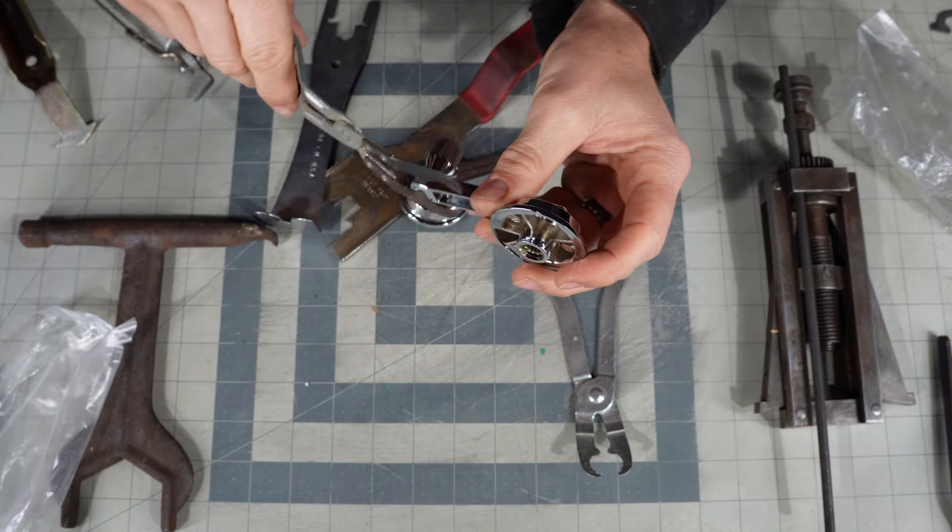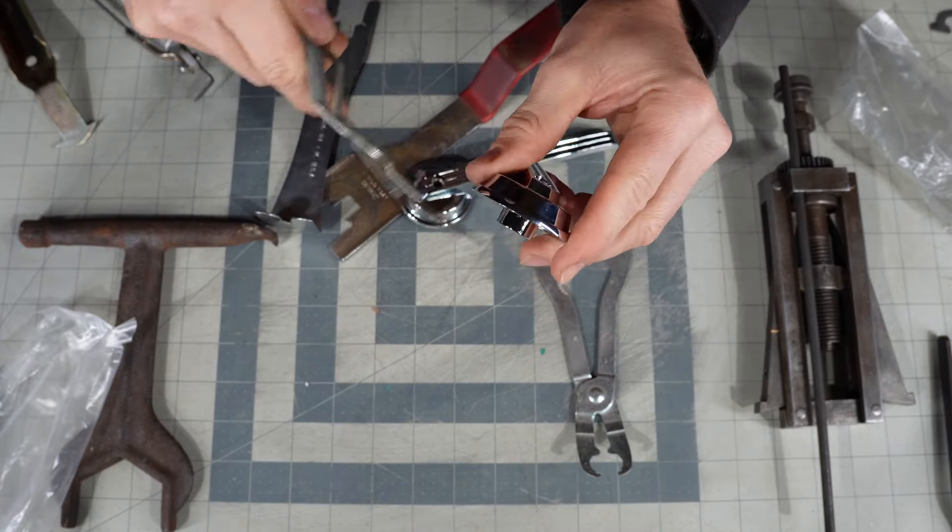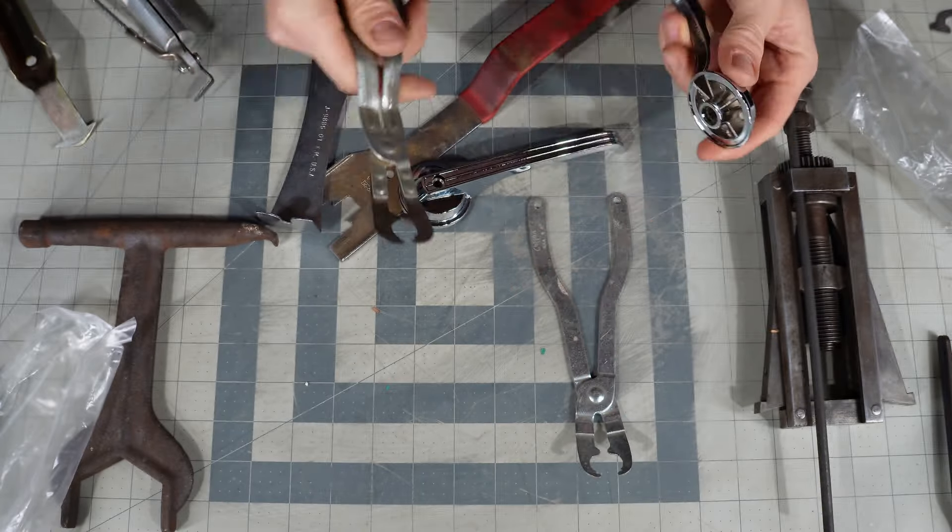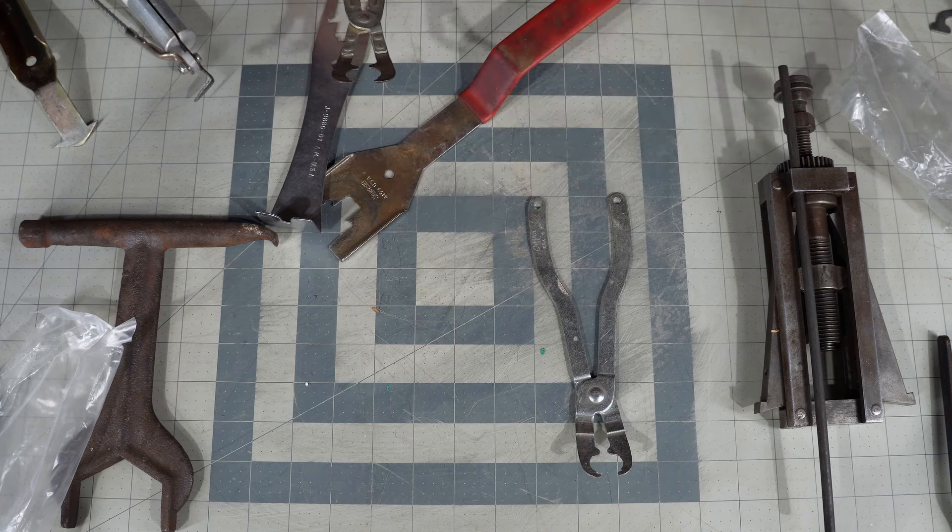These ones work very similar where you would slide in behind, between the handle and the door trim panel, but these ones grab onto a clip. So here's a couple photos to show you what I'm talking about.